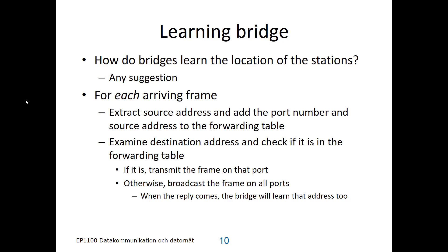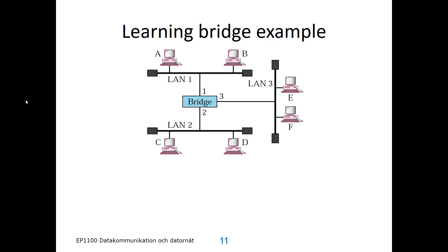So here's an example. We have a bridge with three local area networks connected to port 1, 2 and 3. Originally, the forwarding table is empty. Now A sends a frame to D. D is located on LAN 2 and A is located on LAN 1. So the bridge gets a frame on port 1, and therefore it can mark that the address of A is located on port 1. That's all it knows at this point.